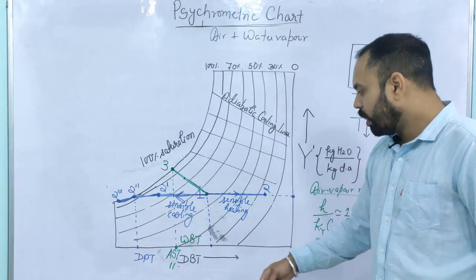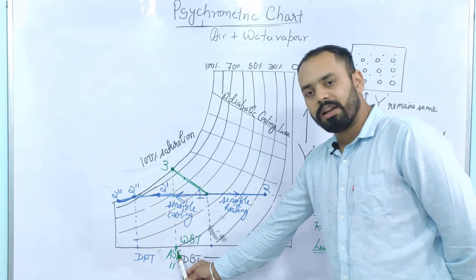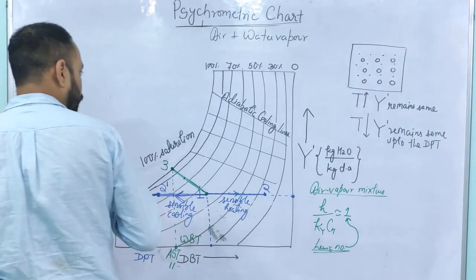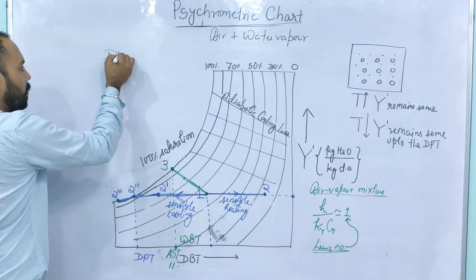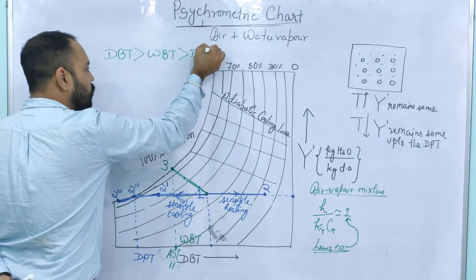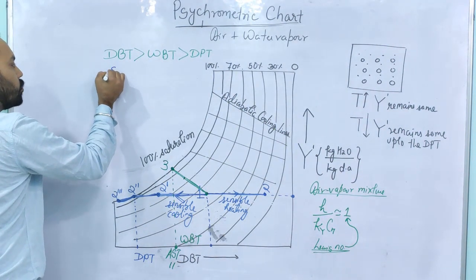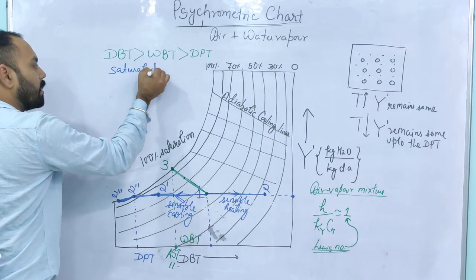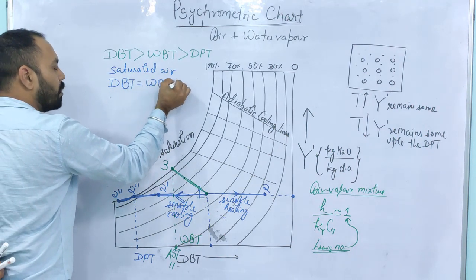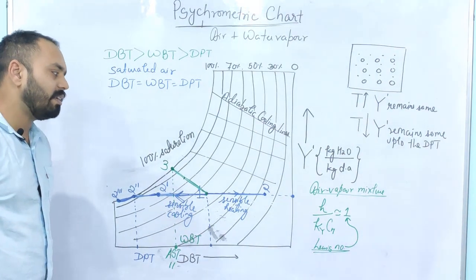From the psychrometric chart, you can observe that the dry bulb temperature of the air vapor mixture is always greater than the wet bulb temperature, which is always greater than the dew point temperature: DBT > WBT > DPT. There is a special case: if the air vapor mixture is already saturated at 100%, then all three temperatures are equal — DBT equals WBT equals DPT.